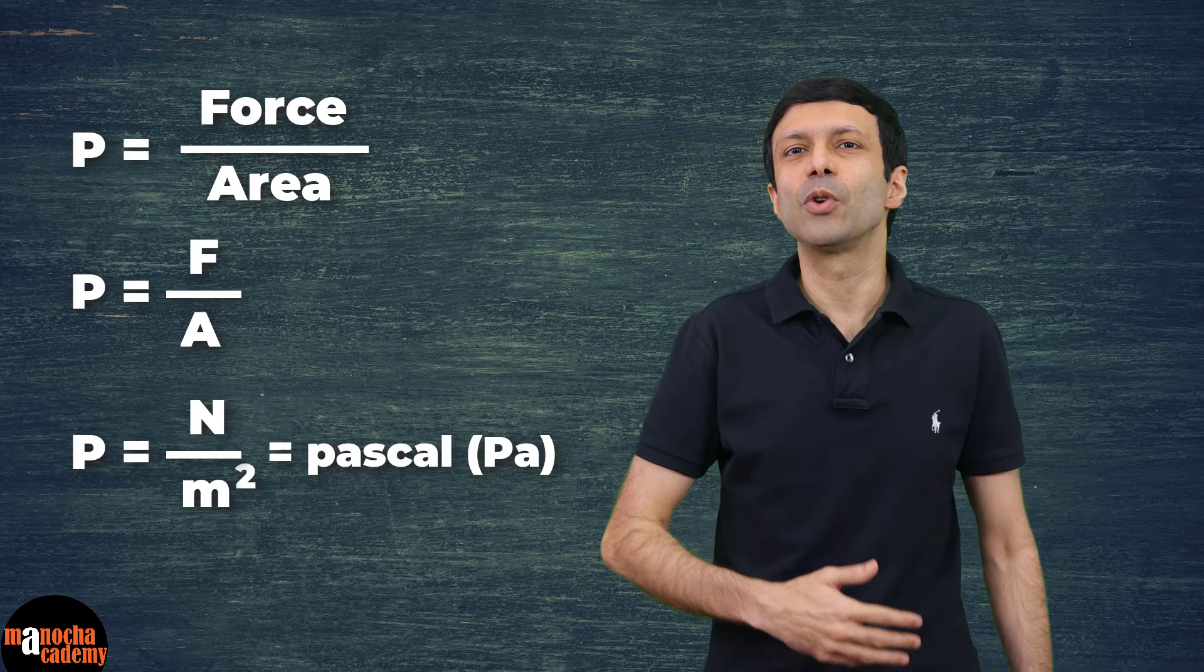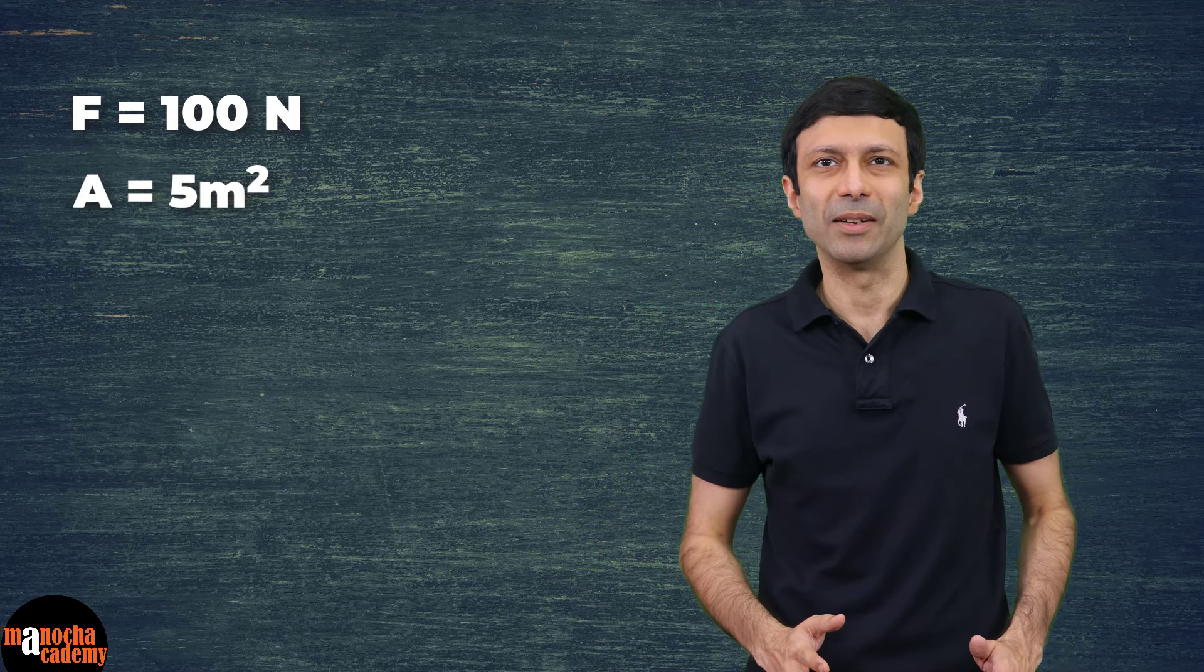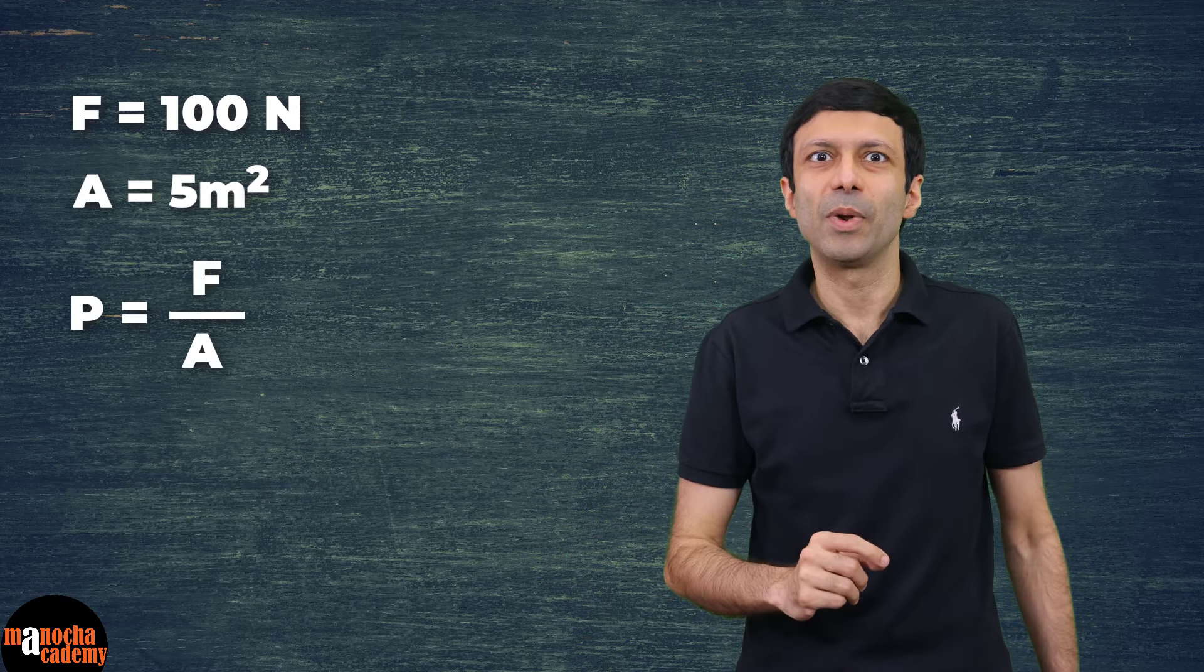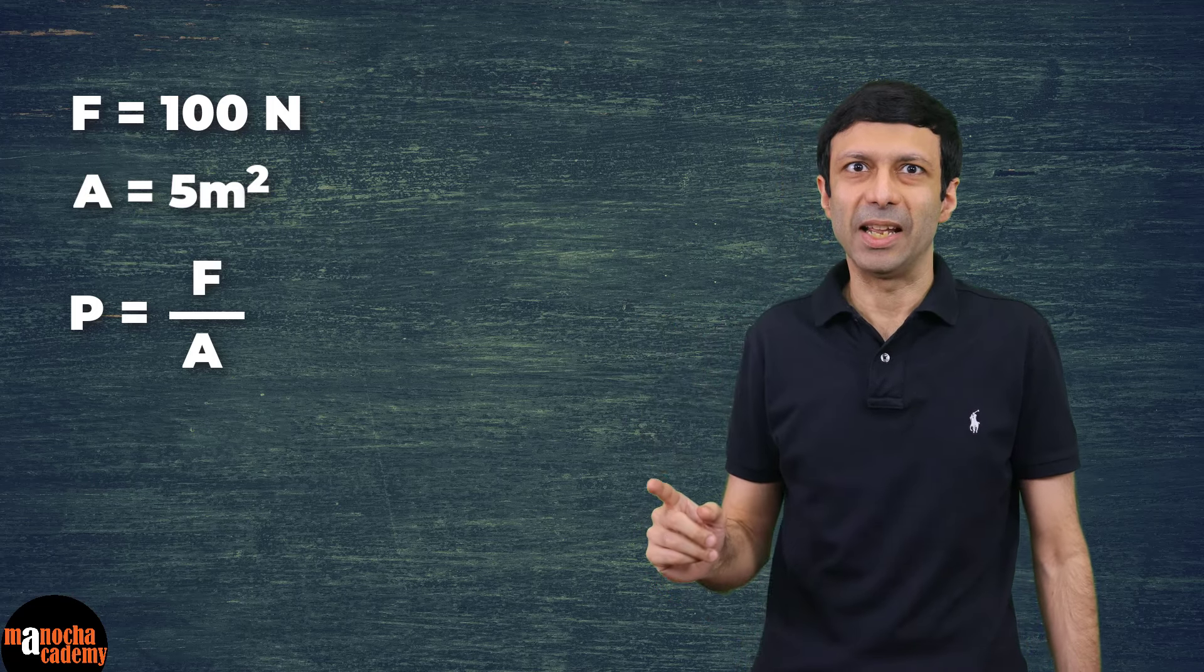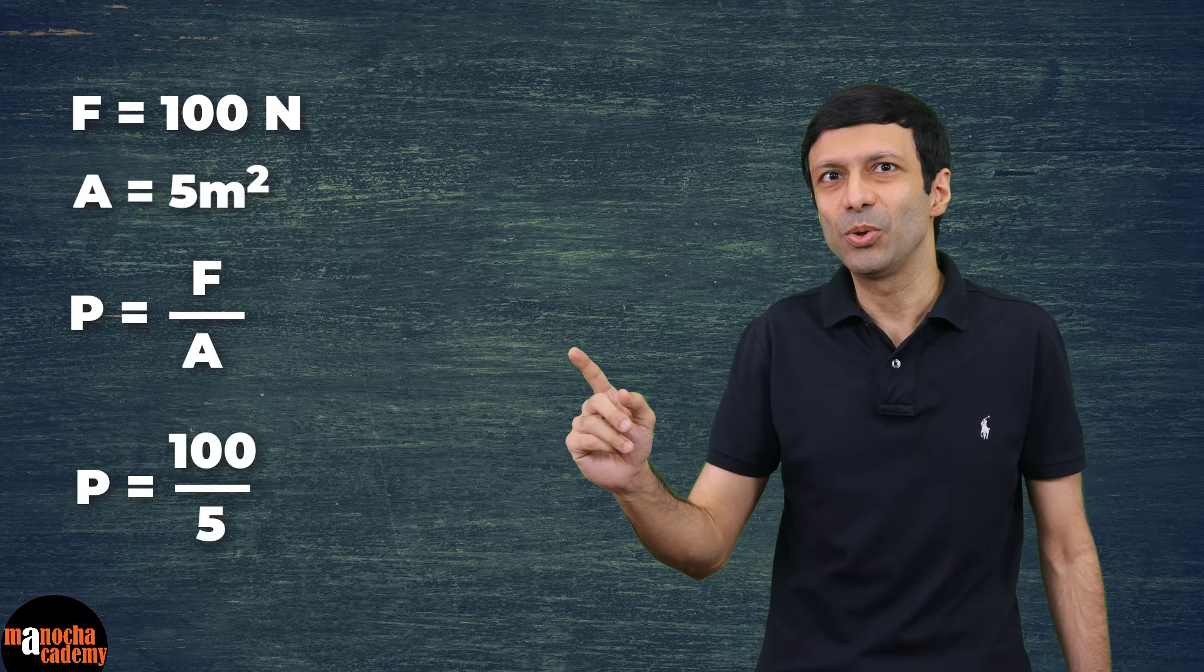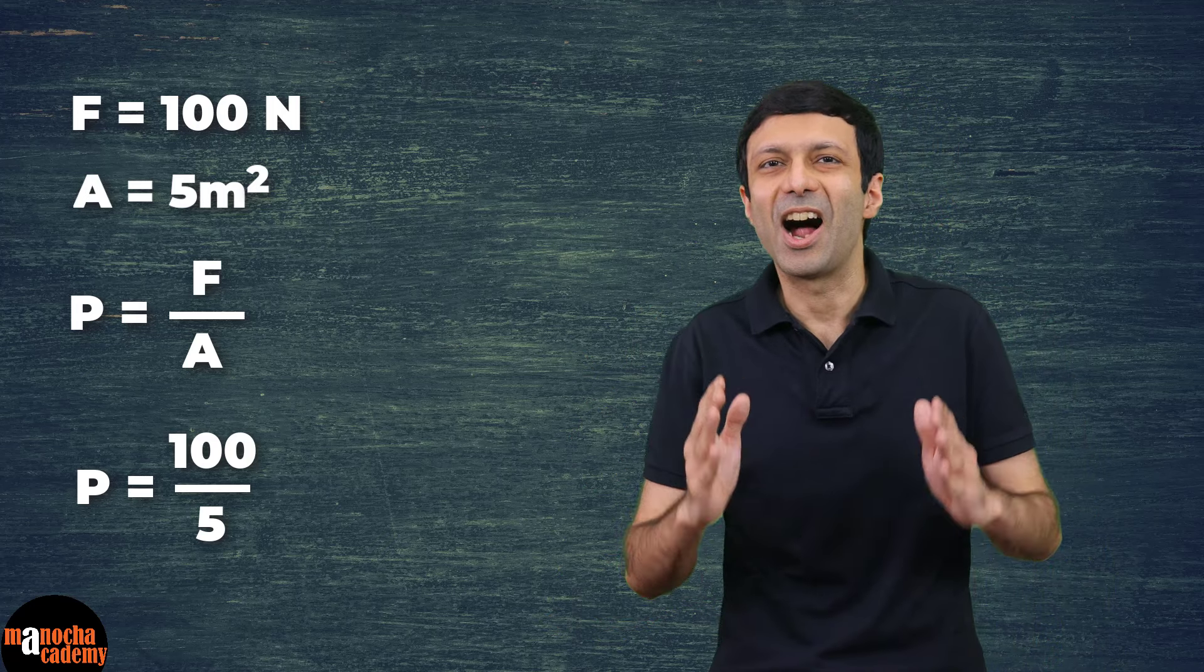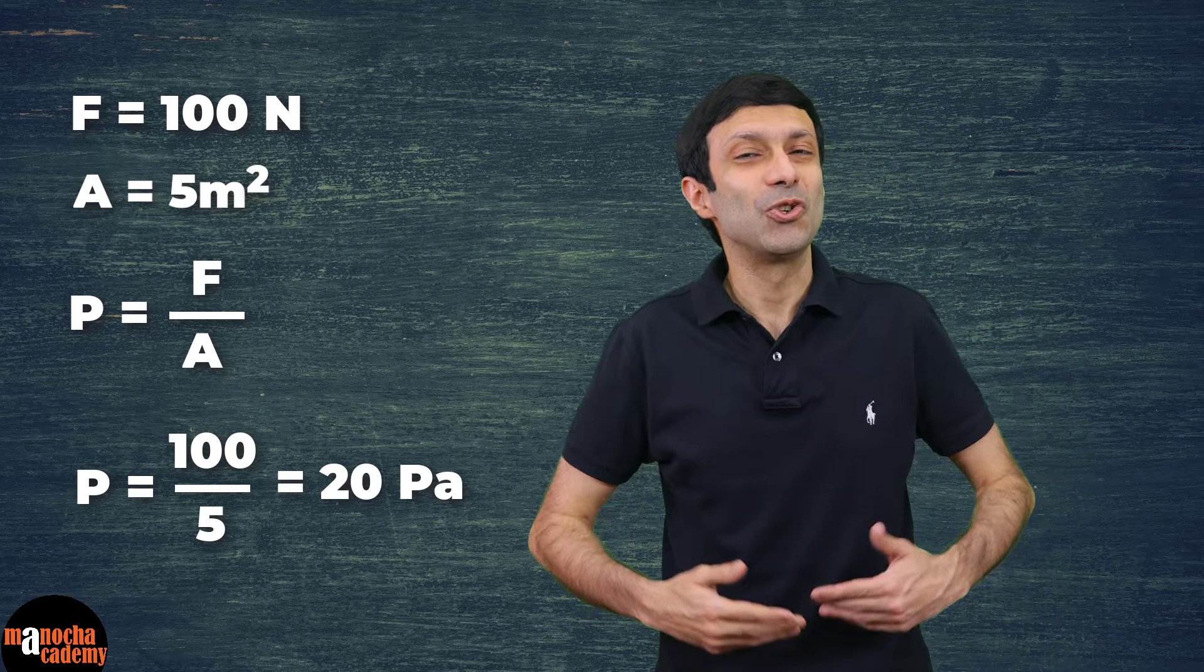Now let's say there's a force of 100 Newton and the area is 5 meter square. So what will be the pressure? The pressure formula is force by area. So that's 100 Newton divided by 5 meter square. So the pressure is going to be 100 by 5 which is 20 Pascal.